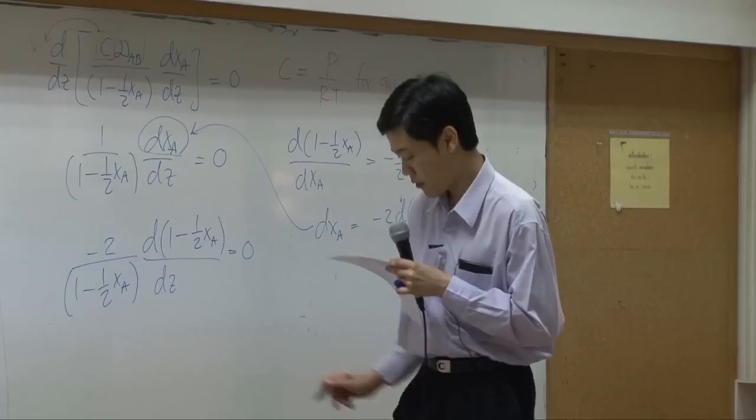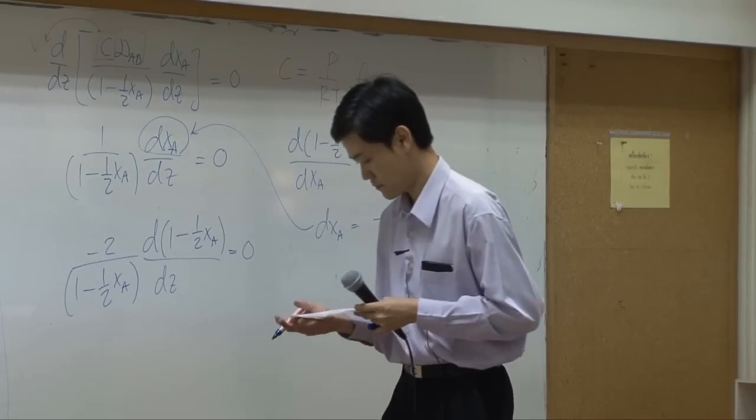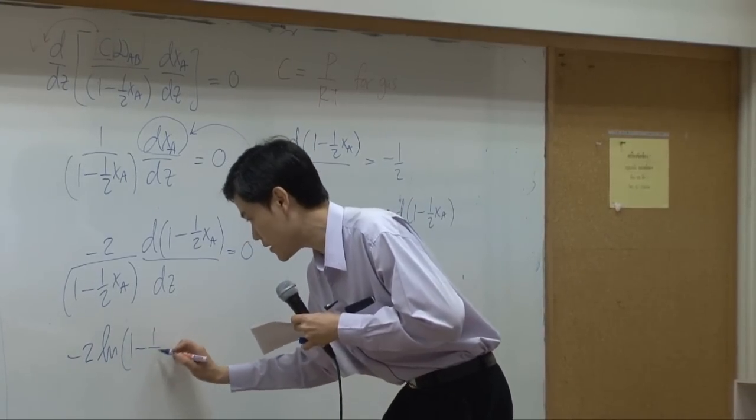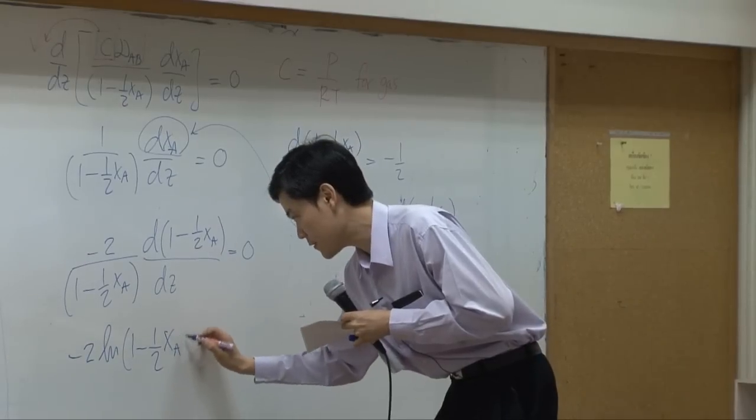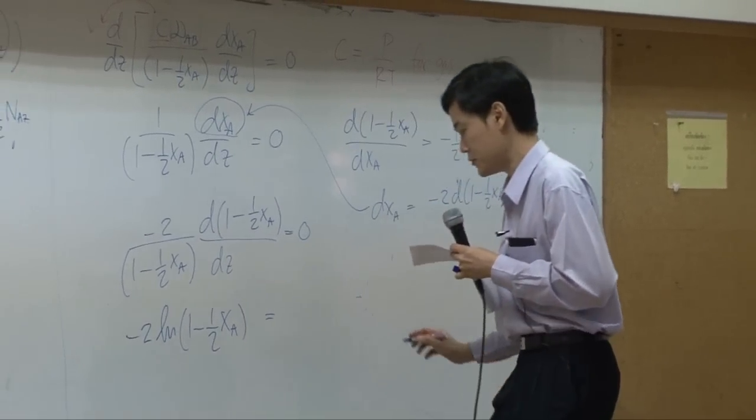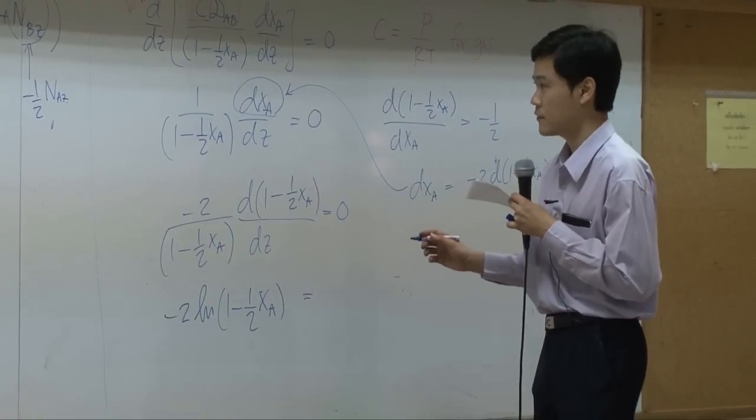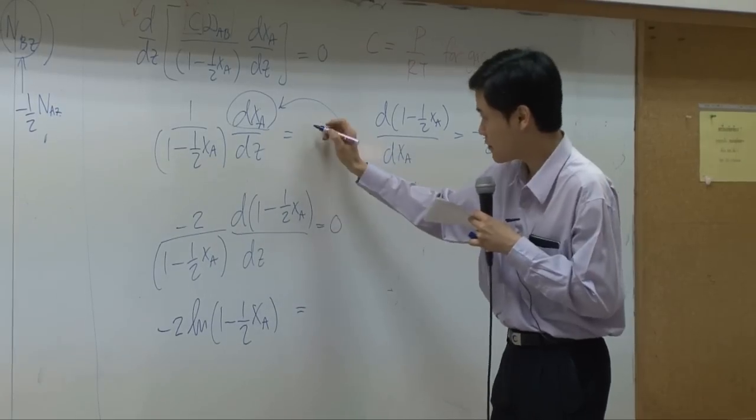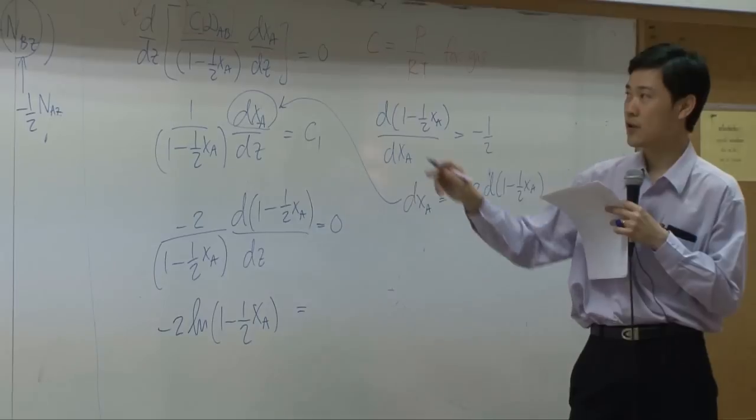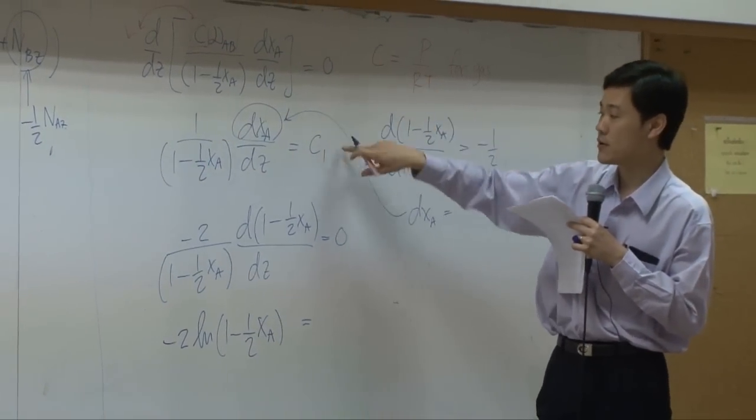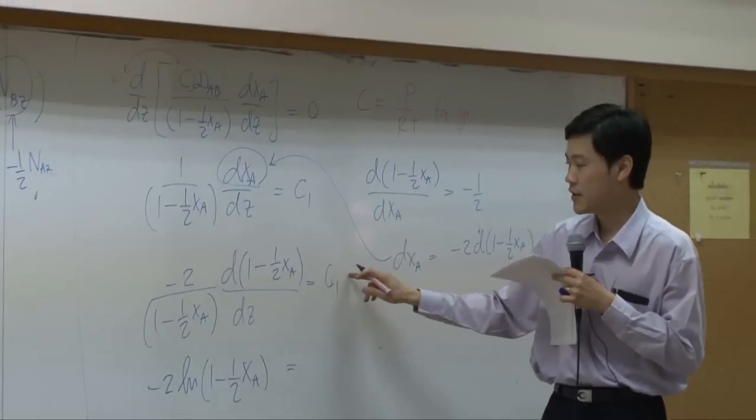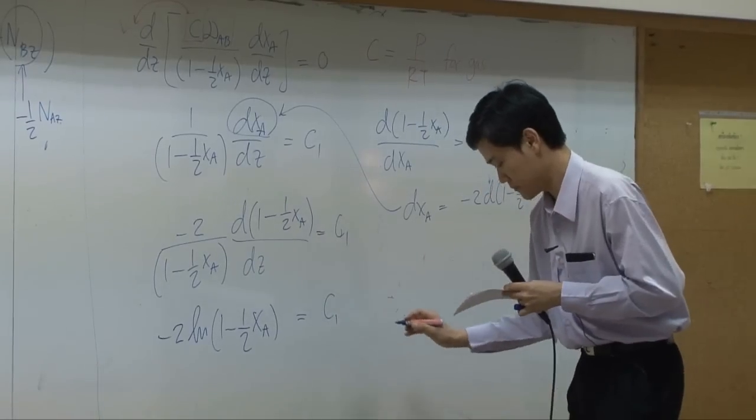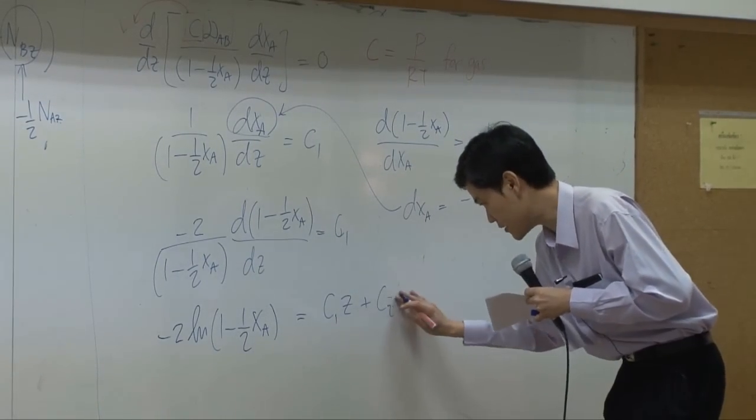So integration of this part, you get minus 2 logarithm of 1 minus half X_A equal to, oops, I'm sorry. From here to here. From here to here, you get constant, right? Integrate it once, you get constant. You integrate it twice, you get C1 times Z plus another constant, C2.